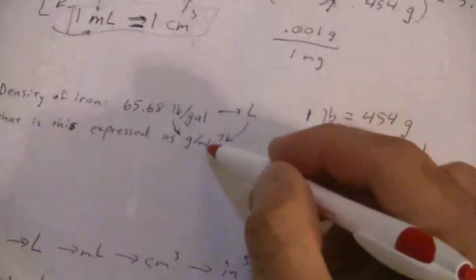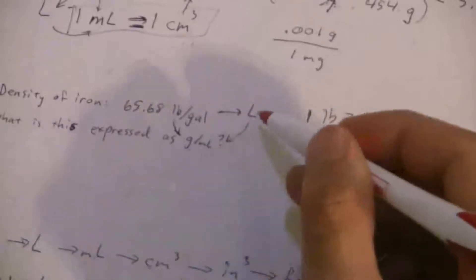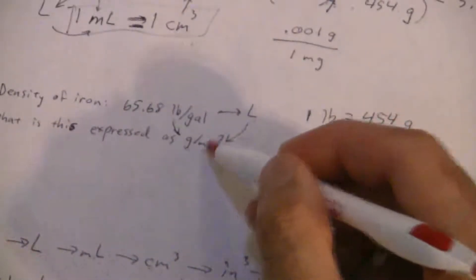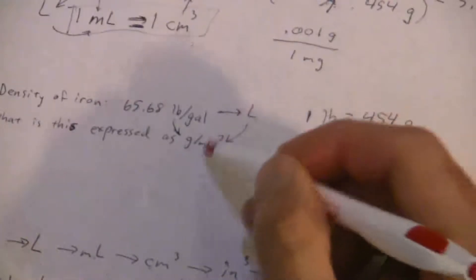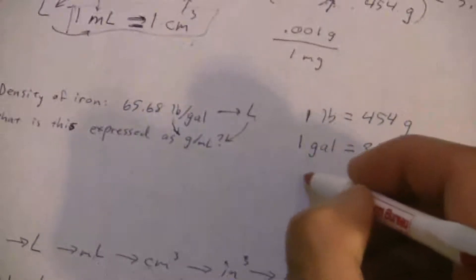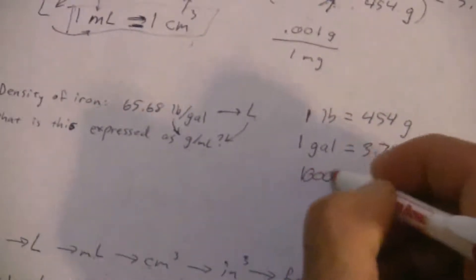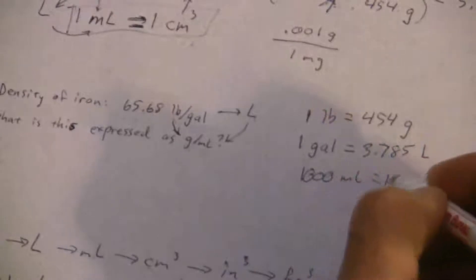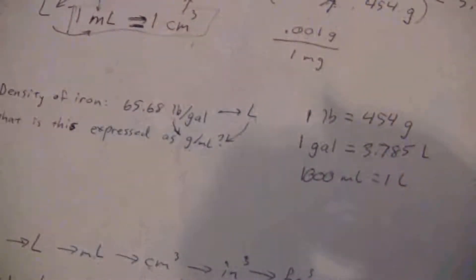So there's that conversion. Now we have the last one, metric to metric - that one you do need to know. Milliliters and liters: there's a thousand milliliters in a liter. Milli is a thousandth of a liter, or a thousand, so there's a thousand milliliters to one liter.